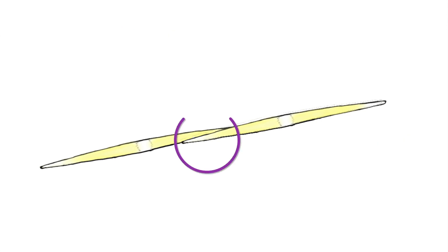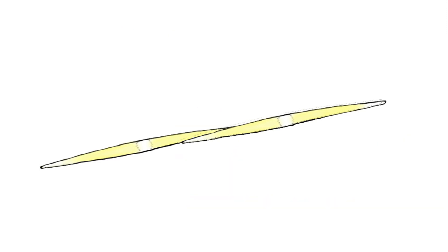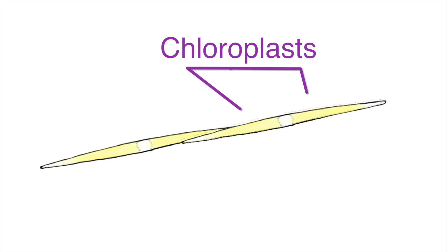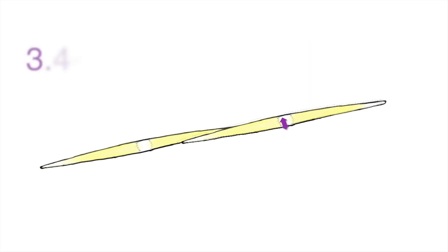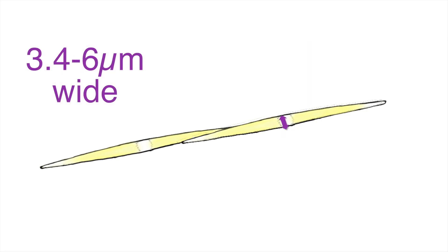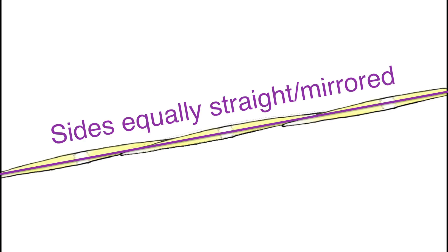Cells in chains overlap about one-fourth to one-third cell length, and, like all other Pseudo-nitzschia species, their two chloroplasts are golden brown in color and are located on either side of the central nucleus. This cell type is 3.4 to 6 micrometers wide, 68 to 140 micrometers long, and both sides of the cell are the same, both appearing generally straight.